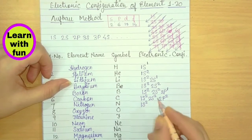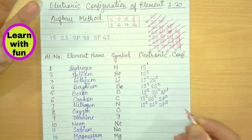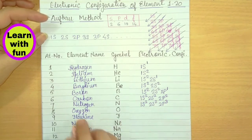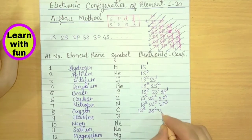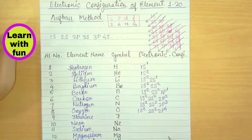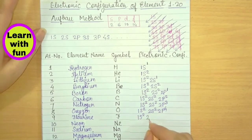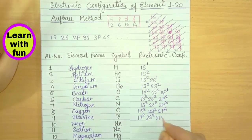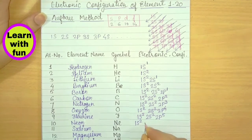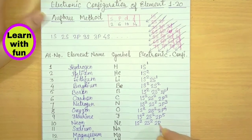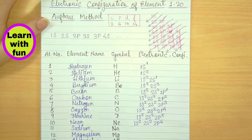Oxygen has 8 electrons: 1S2, 2S2, with 4 remaining electrons going into 2P4. Fluorine has 9 electrons: 1S2, 2S2, with 5 remaining electrons in 2P5. Neon has 10 electrons: 1S2, 2S2, with 6 remaining electrons filling 2P6, completing the shell. This is the electronic configuration for neon.